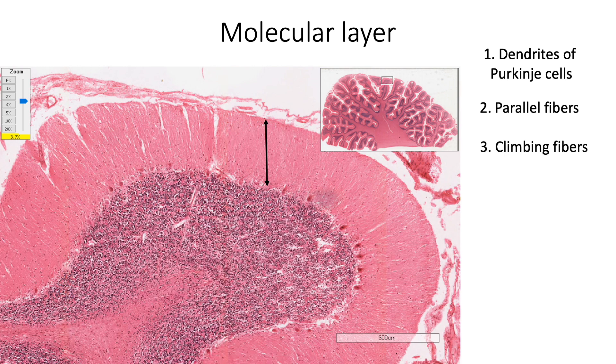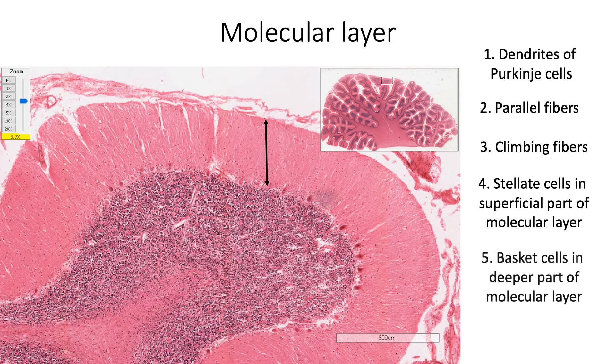It also has cell bodies and processes of two types of interneurons, namely stellate cells, which are found close to the surface of the cerebellum and basket cells, which are found in the deeper part of the molecular layer. Both these cells are involved in feed forward inhibition of Purkinje cells. In addition, we also find neuroglial cells in this layer.